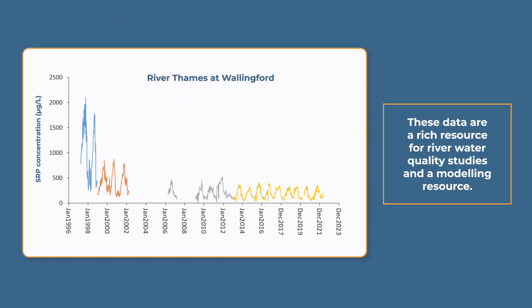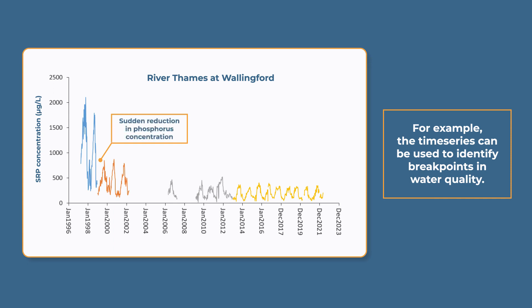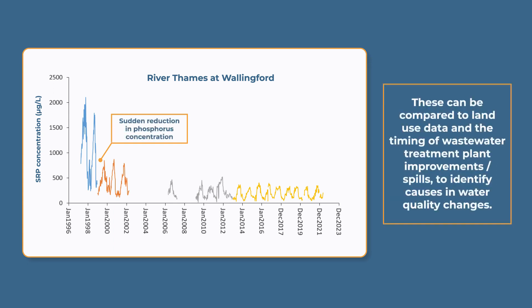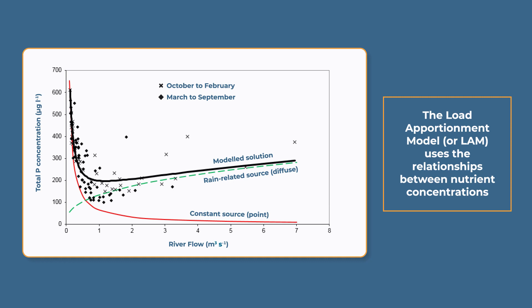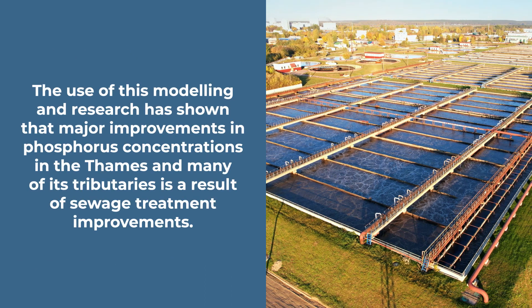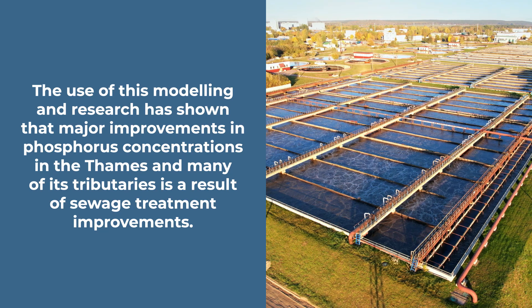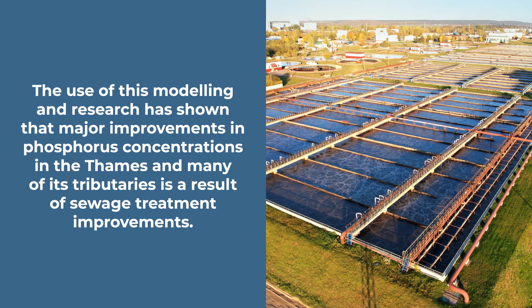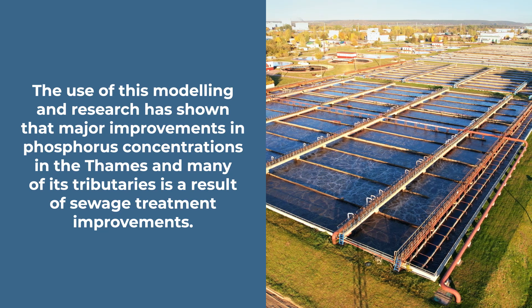These data are a rich resource for river water quality studies and environmental modelling. For example, the time series can be used to identify break points in water quality, which can be compared to land use data and the timing of wastewater treatment plant improvements or spills to identify causes of water quality changes. The load apportionment model uses the relationships between nutrient concentrations and river flow data to estimate inputs coming from sewage and agricultural sources. This modelling and research has shown that major reductions in phosphorus concentrations in the Thames and many of its tributaries is a direct result of sewage treatment improvements.